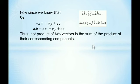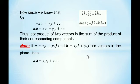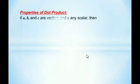Note that if a = x₁i + y₁j and b = x₂i + y₂j are vectors in the plane (no z component), then a·b = x₁x₂ + y₁y₂. Properties of dot product: if a, b, c are vectors and α is any scalar, then the dot product is commutative — we can write a·b = b·a — because the result of the dot product is a real number, so both a·b and b·a give the same result.